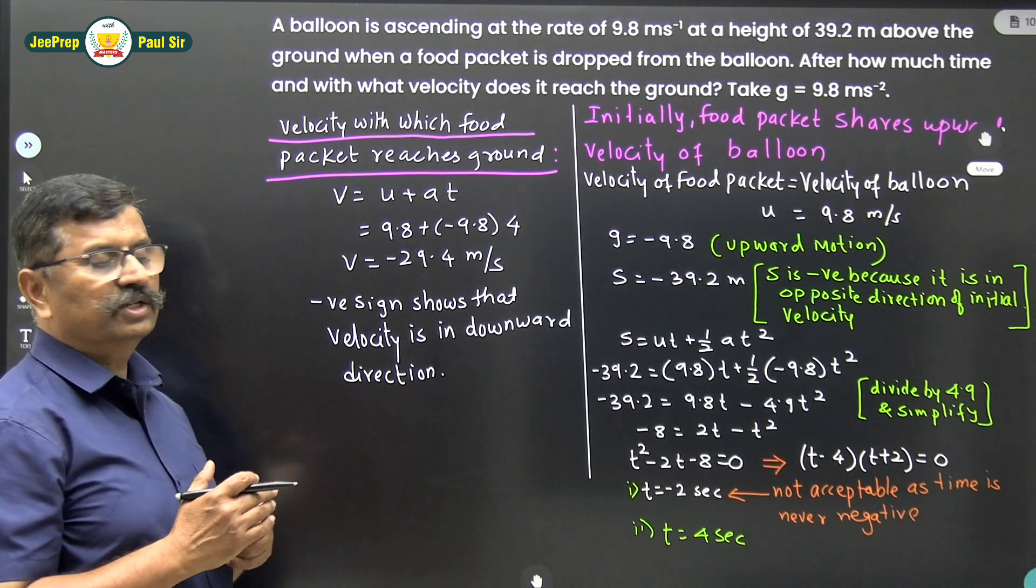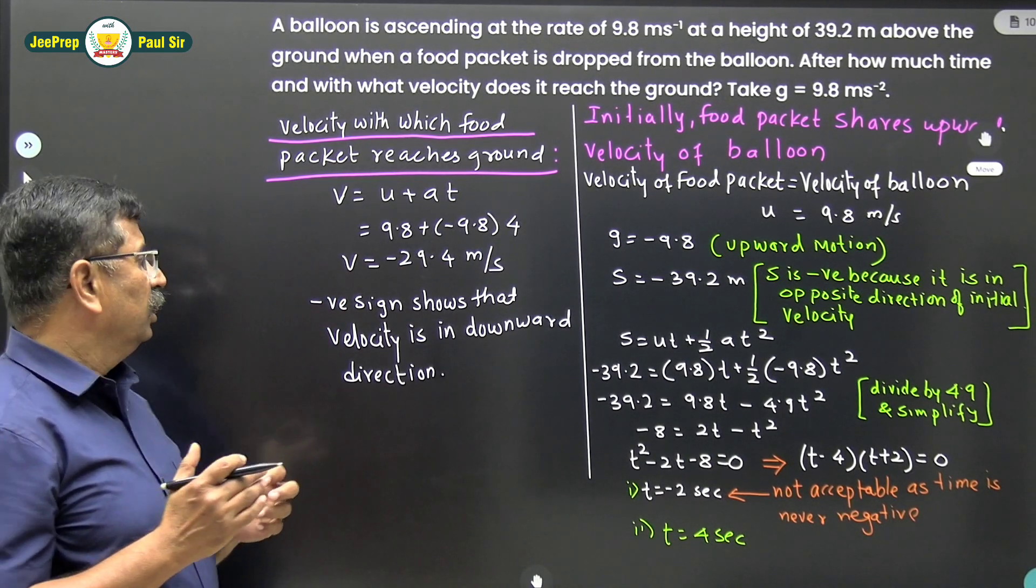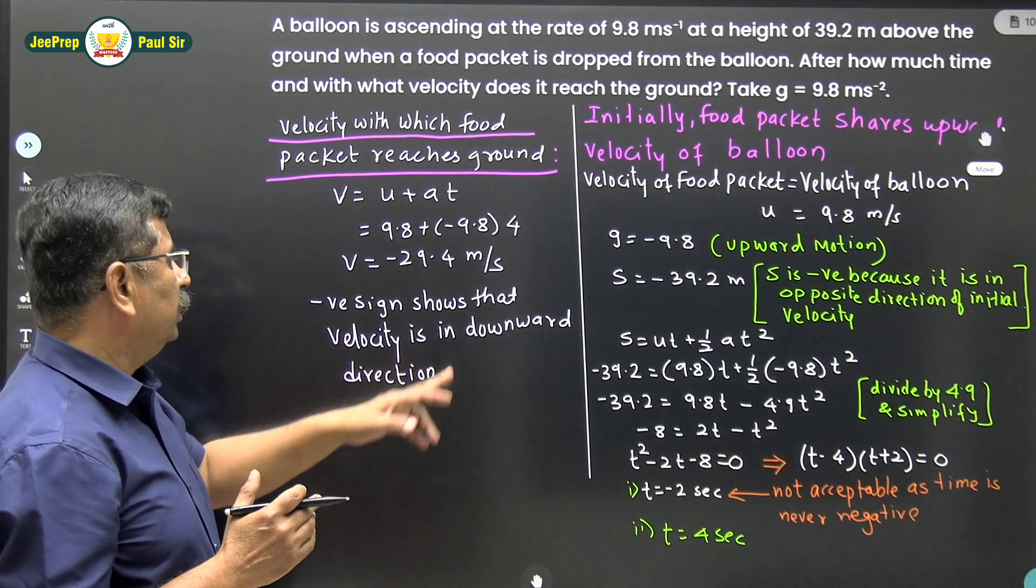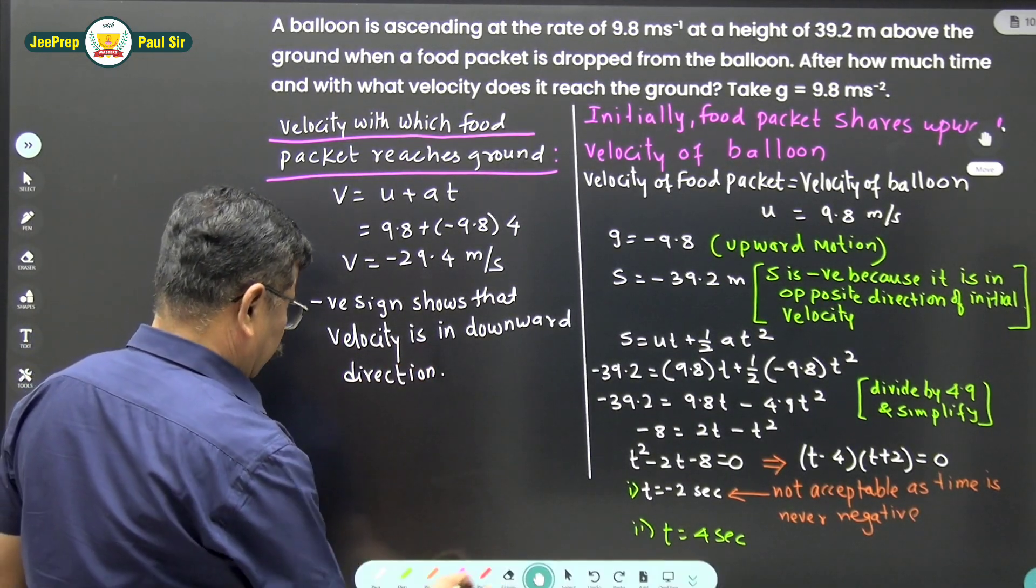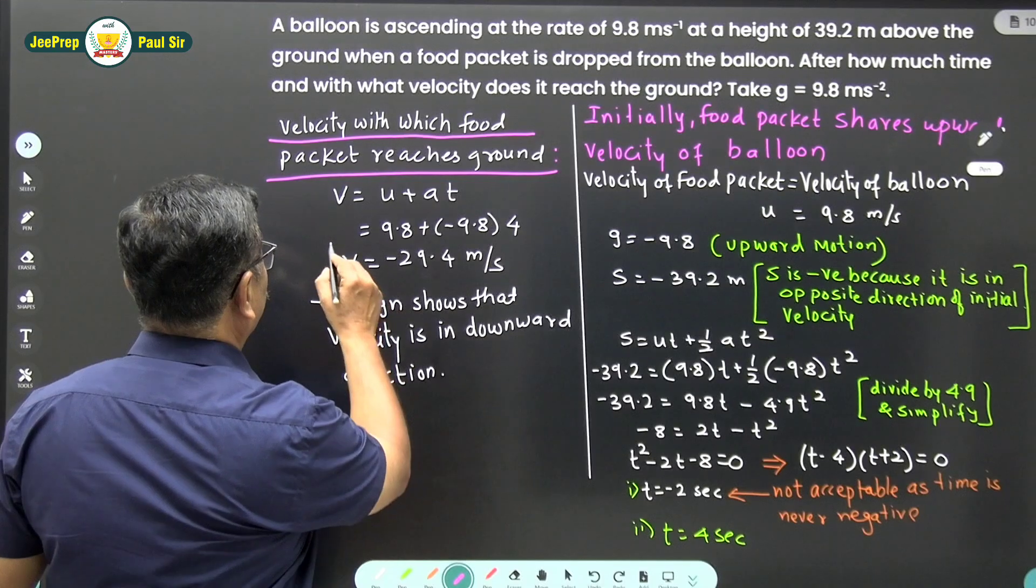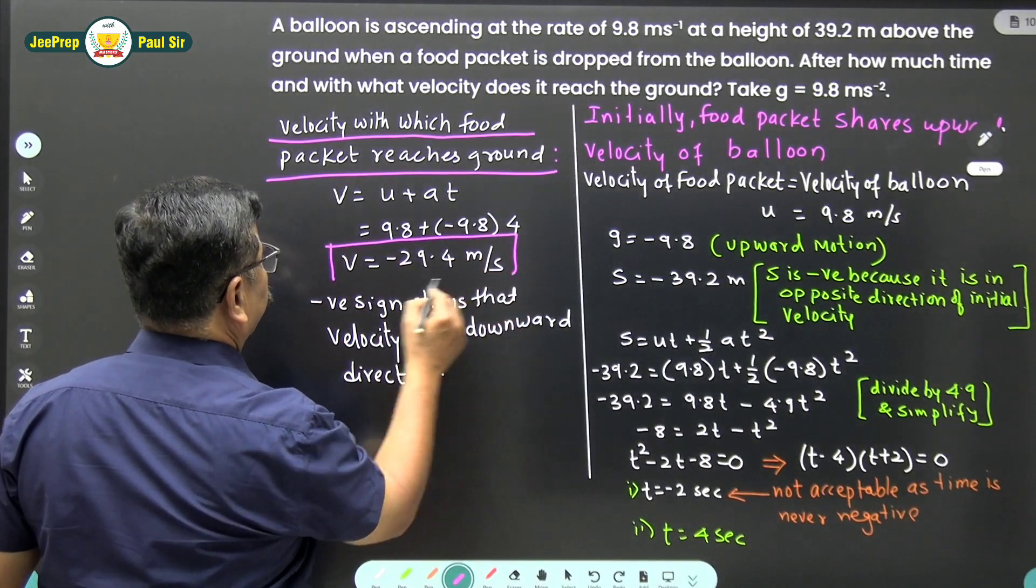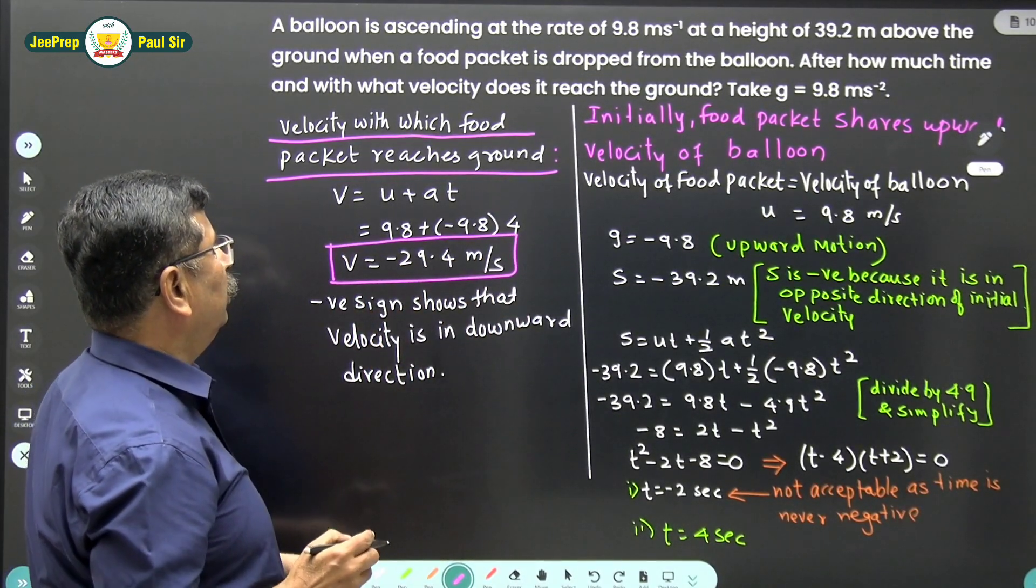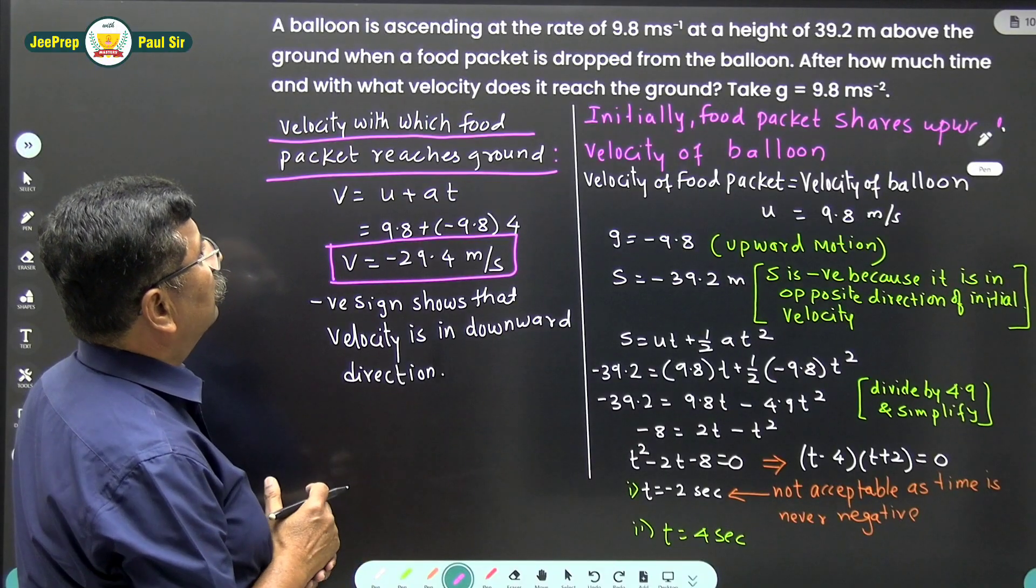The negative sign in this equation shows that velocity is in the downward direction. Therefore the final answer is v equals minus 29.4 meter per second.